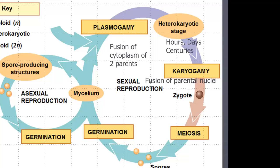During this stage, the nuclei from both our plus and minus hyphae might not fuse. They might stay separate for hours, days, or perhaps even centuries. That's why it's called heterokaryotic — it's the different nuclei coexisting. In some cases, the two nuclei will actually separate into separate cells but still stay unique and separate. At that point, they're called dikaryotic.